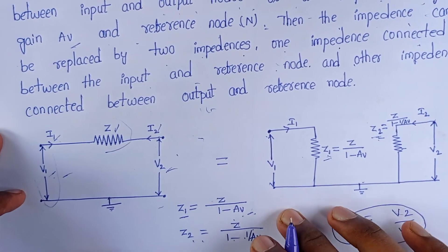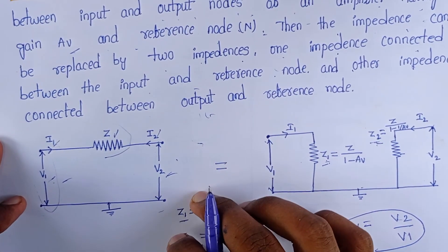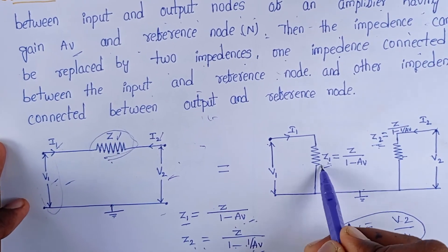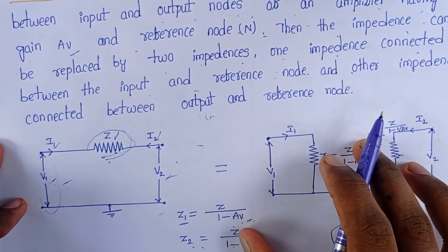Finally, I can conclude this. By using Miller's theorem, we can replace an impedance with two impedances. This is about Miller's theorem.